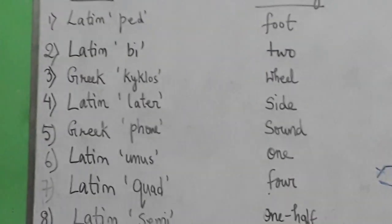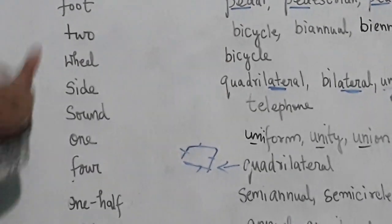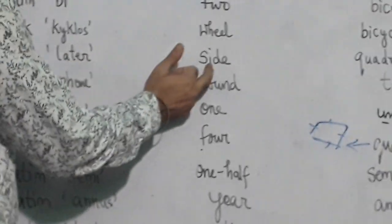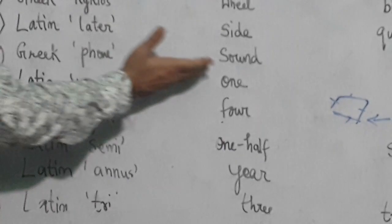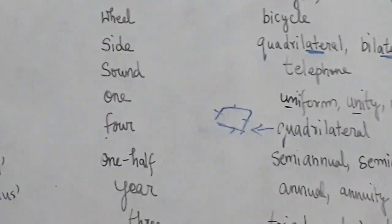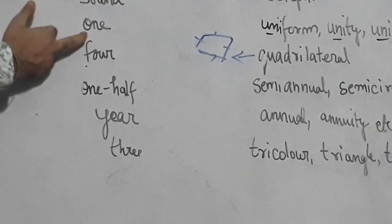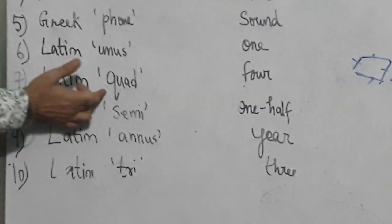So I showed you the sentences. Now we have, in the same manner, Greek 'cycl' which means wheel, giving us bicycle. Then we have Latin 'later', which gives us lateral - that is quadrilateral, bilateral, unilateral. Greek 'phone' means sound, giving us telephone. Latin 'uni' means one, and we have words like uniform, unity, union. Latin 'quad' which means four gives us quadrilateral.